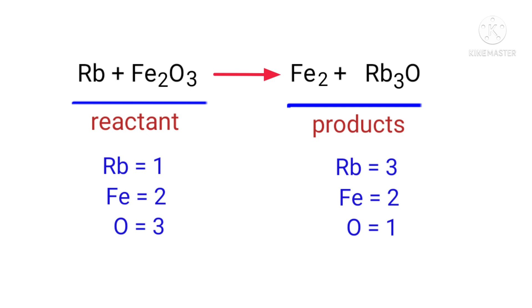To balance the chemical equation, we need to make use of coefficients. A coefficient is a number that we place in front of a chemical formula.